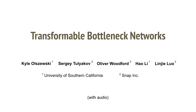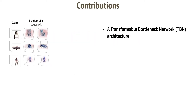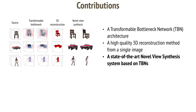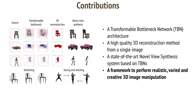We present a novel approach to extracting and manipulating 3D content from images, which we call Transformable Bottleneck Networks, or TBNs. A TBN is an encoder-decoder network in which three-dimensional spatial transformations are performed directly on the volumetric bottleneck layer. We show high-quality 3D reconstruction from a single image, demonstrate a state-of-the-art novel view synthesis system based on TBNs, and a variety of creative manipulation tasks using this framework.